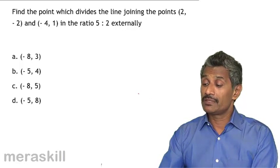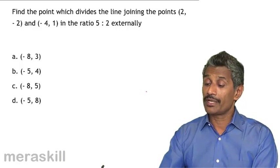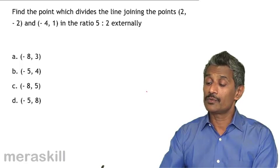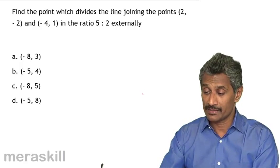We have one more point, that is a point which divides the line joining the points (2, -2) and (-4, 1) in the ratio 5:2 externally.